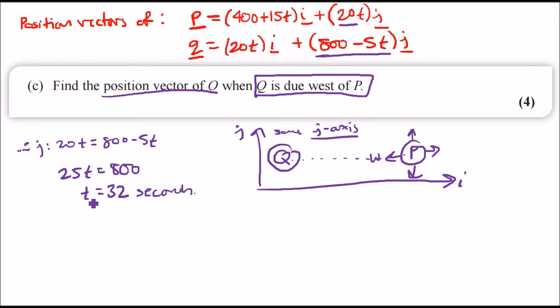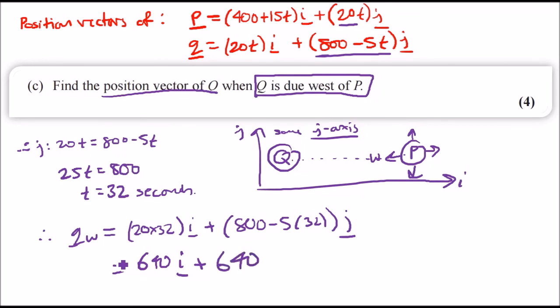Therefore the position vector of Q when it's due west equals: we just plug in the values, so 20 times 32 i plus 800 minus 5 times 32 j. And all in all this should give us, according to my calculation, 640i plus 640j.